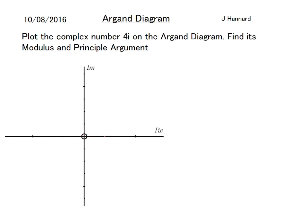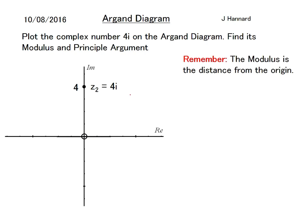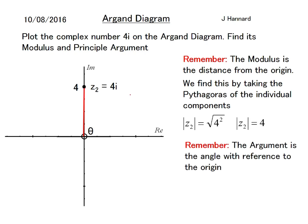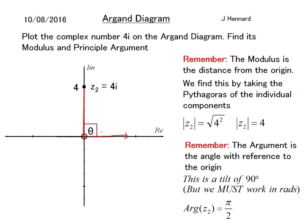Example two: plot the complex number 4i on the Argand diagram and find its modulus and principal argument. You might notice there is no real component, so we simply go straight up — 4 is up there on the imaginary axis, and z₂ = 4i. The modulus is the distance from the origin — we draw a line from the origin to the point, and since we've just walked 4 up the axis, the modulus is simply 4. The argument is the angle from the origin — we always start pointing right, and this means the angle is a right angle: 90 degrees, which in radians is π/2. So arg(z₂) = π/2.